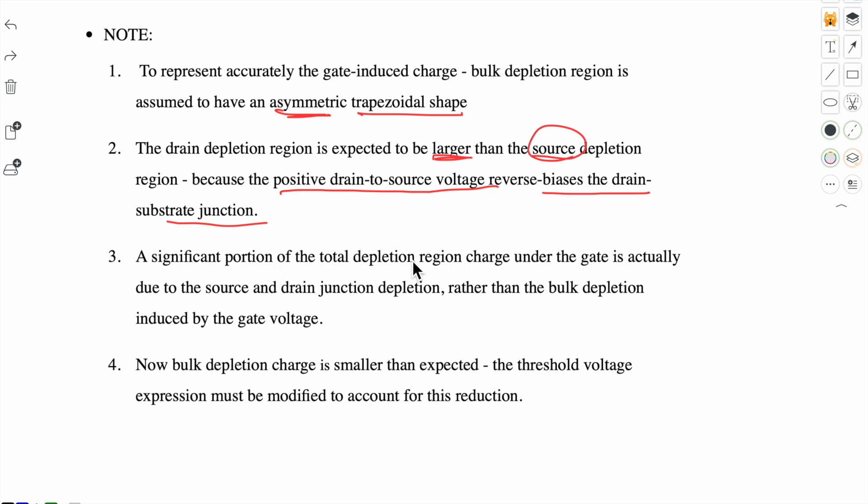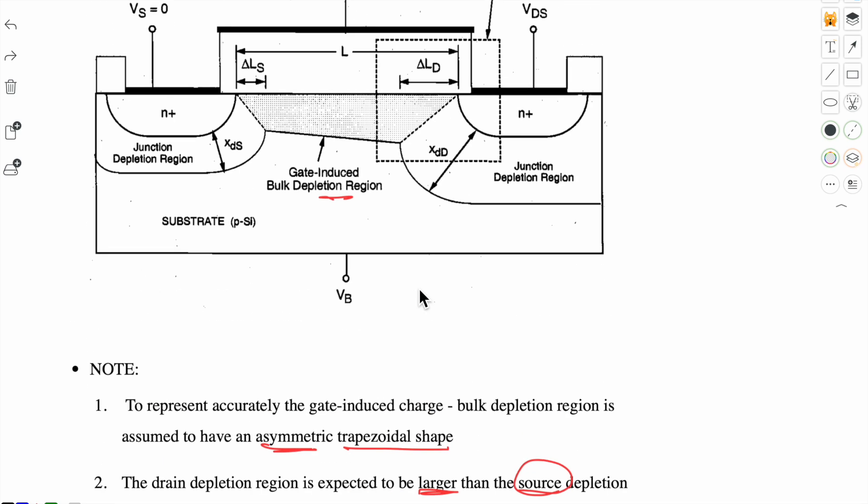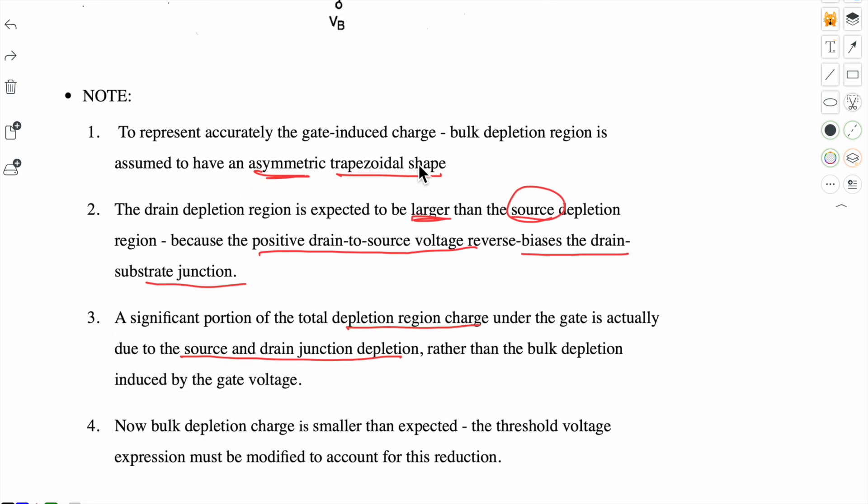And third, a significant portion of the total depletion region charge under the gate is actually due to source and drain junction depletion. So you can see that a lot of charge is coming due to the source and drain junction depletion region, rather than the bulk depletion induced by the gate voltage. Fourth, now the bulk depletion charge is smaller than expected, so the threshold voltage expression must be modified to account for this reduction.